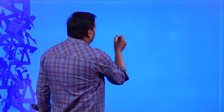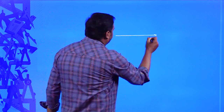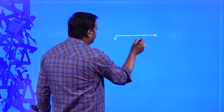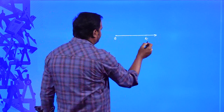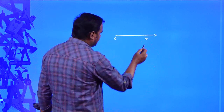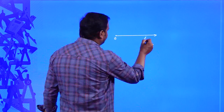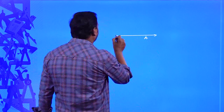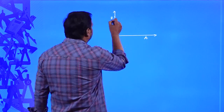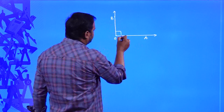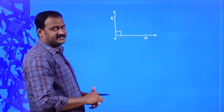Let us discuss about special types of angles between two lines. So what are those special types of angles? For example, this is one ray OA and another ray OB. So what is the angle between these two rays? Let us suppose it is 90 degrees.